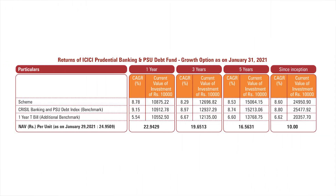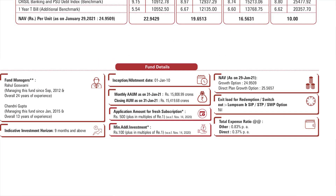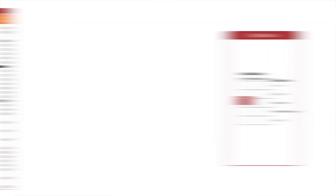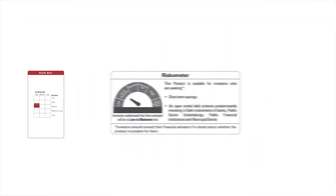Now let's understand the different parts of a debt fund fact sheet with an example — we have one here for the ICICI Prudential Banking and PSU Debt Fund. Most fact sheets can be divided into six main sections: the performance section, the fund details, the quantitative indicators, the portfolio, the style box, and the riskometer.